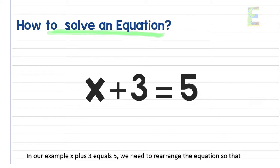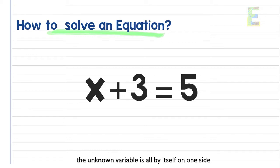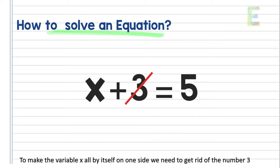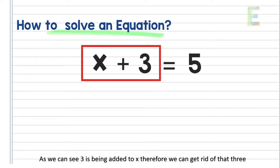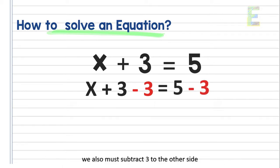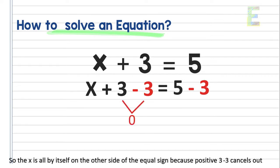In our example, x plus 3 equals 5, we need to rearrange the equation so that the unknown variable is all by itself on one side. To make the variable x all by itself, we need to get rid of the number 3. Since 3 is being added to x, we can get rid of that 3 by subtracting 3 on that side. And to keep our equation balanced, we also must subtract 3 on the other side. The x is now all by itself because positive 3 minus 3 cancels out.